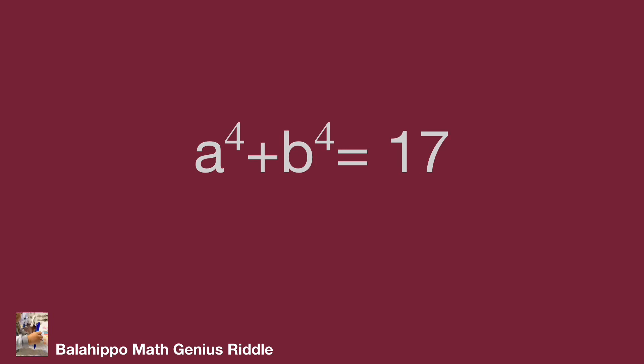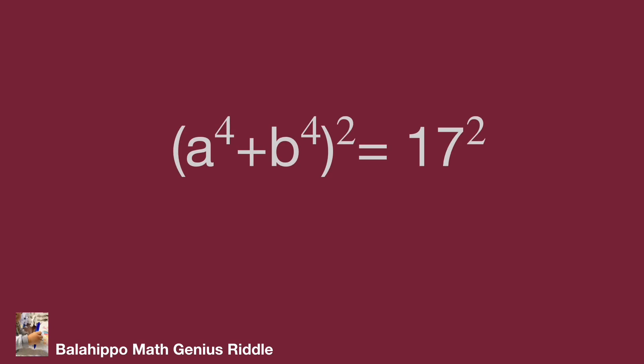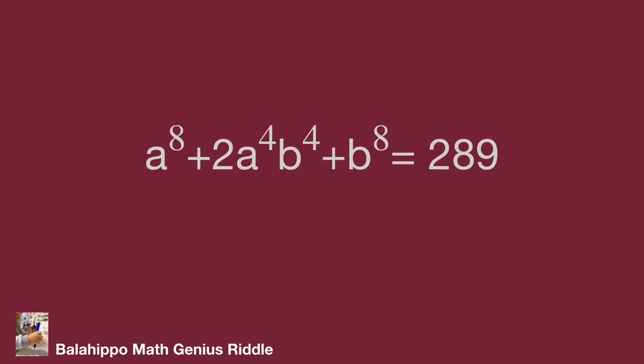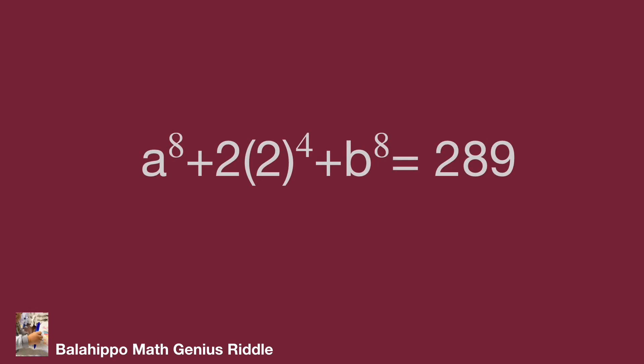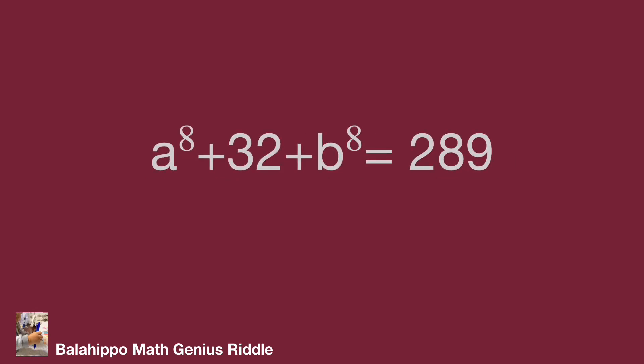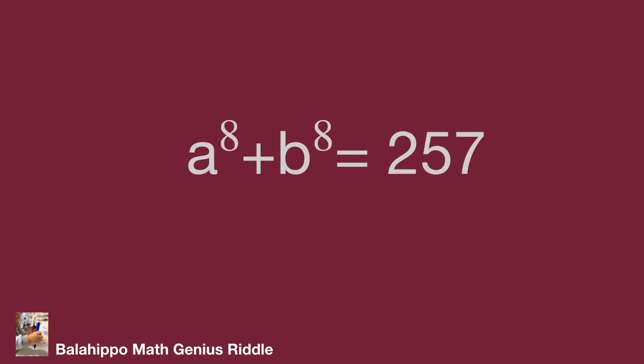Same operation to generate a power of 8. Square a power 4 plus b power 4 equal to 17. Develop it as a power 8 plus 2 times a power 4 times b power 4 plus b power 8 equal to 289. Substitute ab by 2, then a power 8 plus 2 times 2 power 4 plus b power 8 equal to 289. So a power 8 plus 32 plus b power 8 equal to 289. So a power 8 plus b power 8 equal to 257.